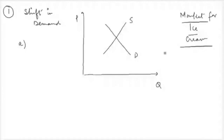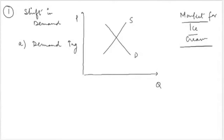First, we identify which market force is changing. It is clear that demand is changing — in fact, demand is increasing. Because of the change in weather becoming hotter, people's tastes and preferences will change. Suppose the initial equilibrium of the economy was at point E, where the price was P* and quantity was Q*.